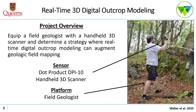As a project overview, what we looked at doing was equipping a field geologist with a handheld 3D scanner and determining a strategy where real-time digital outcrop modelling can augment traditional geologic field mapping. The sensor we used was a Dot Product DPI 10, which you can see here, carried around the field by the field geologist to gather outcrop models.